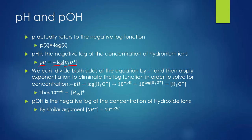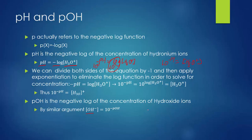The math is simple. Dividing both sides by negative 1 gives: negative pH equals log of the concentration of H3O+. Then I apply the inverse of the log function — which is 10 raised to that power — to both sides. This gives 10 to the negative pH equals the concentration of H3O+. Similarly, pOH is the negative log of hydroxide concentration, so 10 to the negative pOH equals the concentration of OH-.